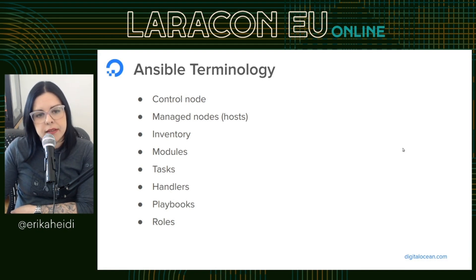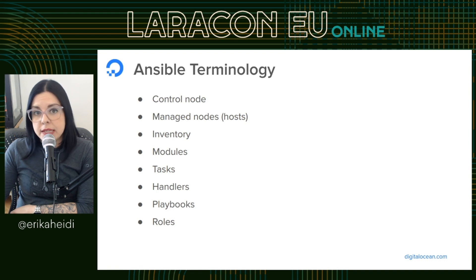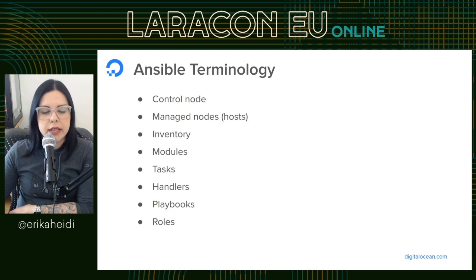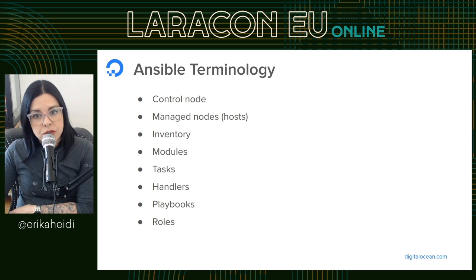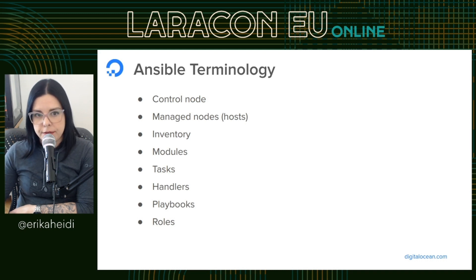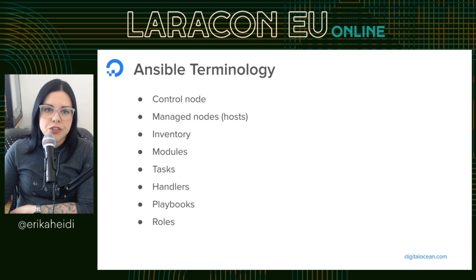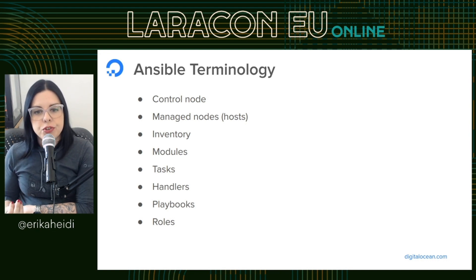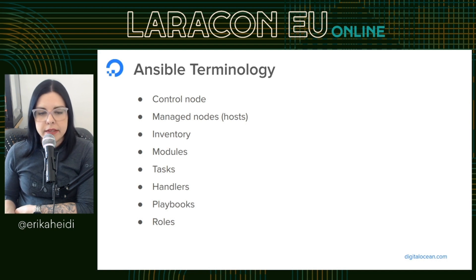Let's cover the terminology we need when talking about Ansible. The control node is the machine where you have Ansible installed — it can be your local machine or a remote server. Managed nodes are the hosts you are going to control using Ansible, and these are listed in an inventory file. The inventory file is where you have all your hosts, and you can create groups and subgroups there. Modules are a collection of similar functionality — for example, a module for installing packages, a module for using the template system, or a module for running Composer.